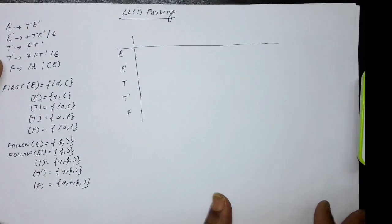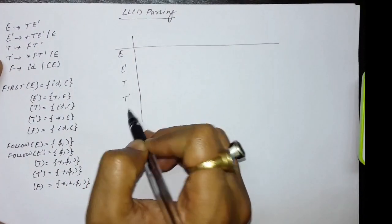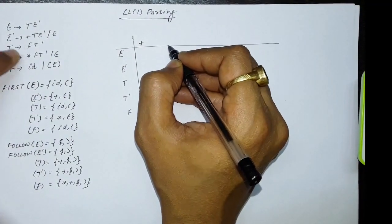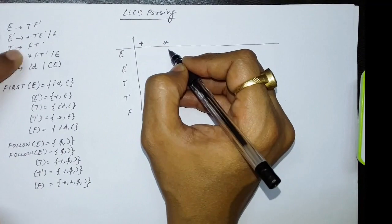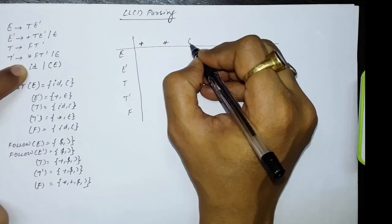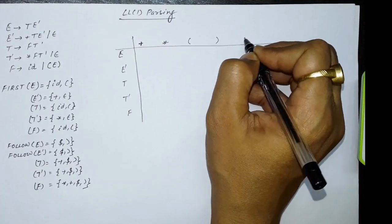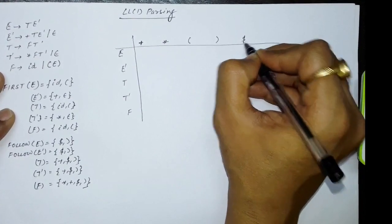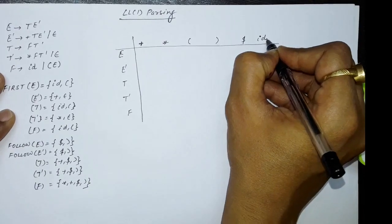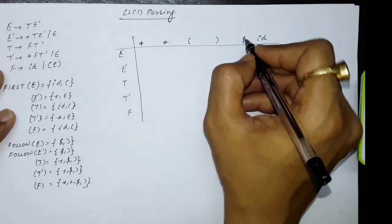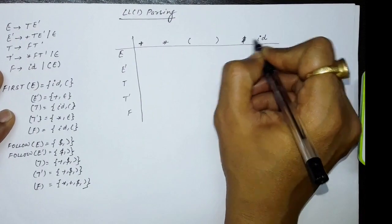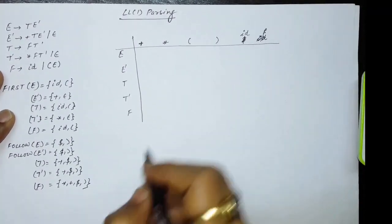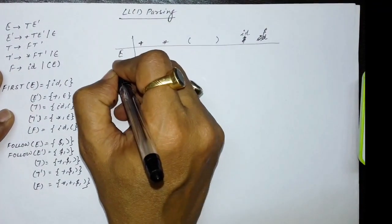The non-terminal symbols are E, E', T, T', and F. The terminal symbols are plus, star, opening parenthesis, closing parenthesis, ID, and dollar. It is better to write dollar at the last. These are the symbols that we need to write in the parsing table.